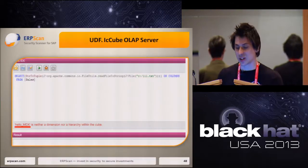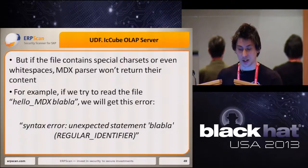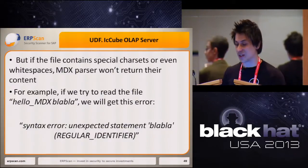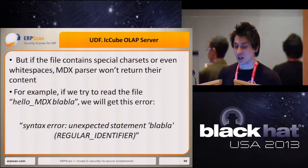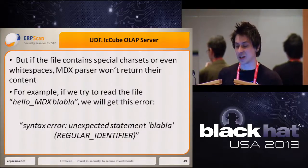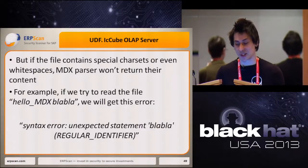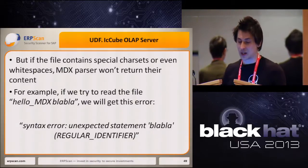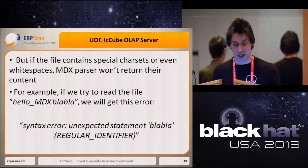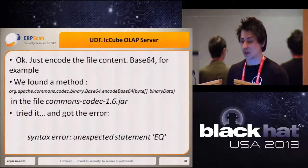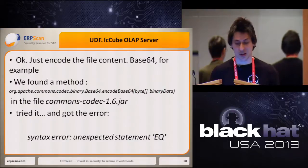This slide shows the final file-read query where we call the user-defined function readFileToString. The server returned an error: 'Hello MDX is neither a dimension nor a hierarchy within the cube.' We got an error which contains the file content. But we couldn't read anything interesting because special characters — commas and even spaces — crashed the MDX parser, and only part of the file was transferred. For example, if we try to read a file with whitespace, we get an 'unexpected statement' error. The solution is obvious: just encode the file content — for example, with Base64.